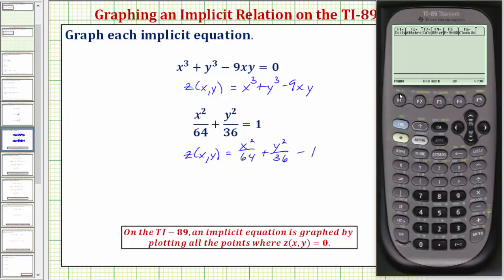Now we go to the y equals screen by pressing diamond f1. Notice how we have z1, z2, and so on. So z1 is z1 of x comma y, so we enter x raised to the power of three, plus y raised to the power of three, minus nine, and now for xy we need to enter x times y. So we have x times y and enter.